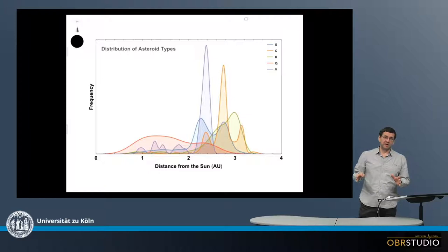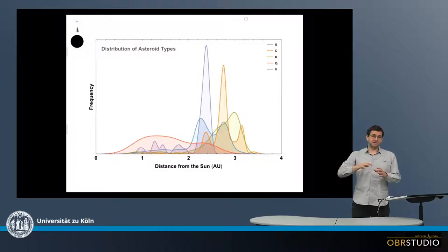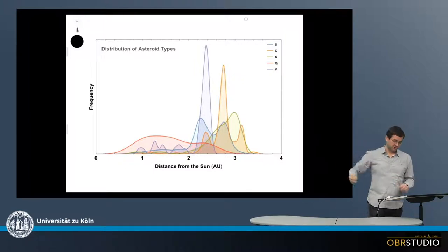These different types are not homogeneously distributed throughout the asteroid belt. Rather, different abundances of these types cluster at different distances, and this is what is shown here on this plot.